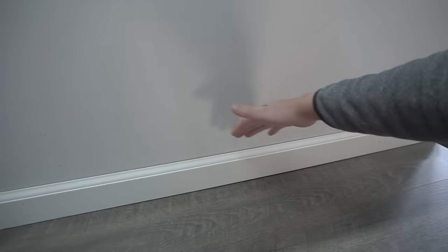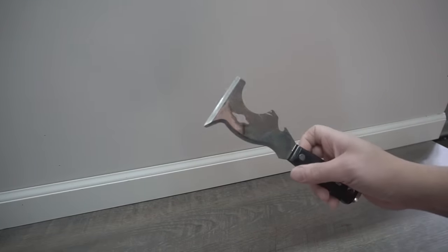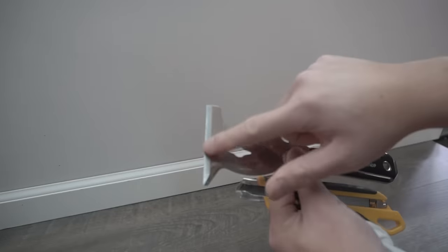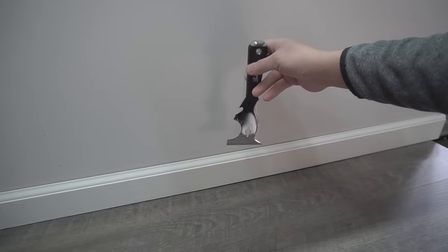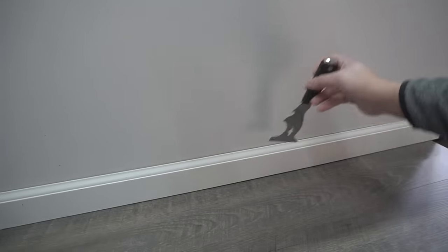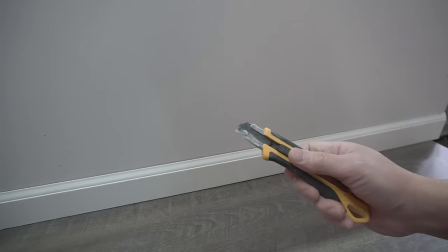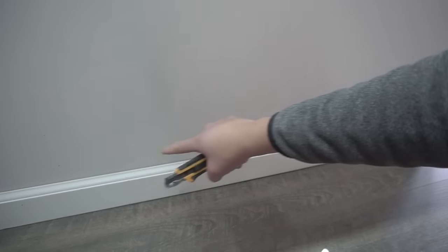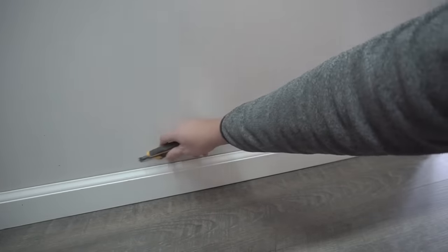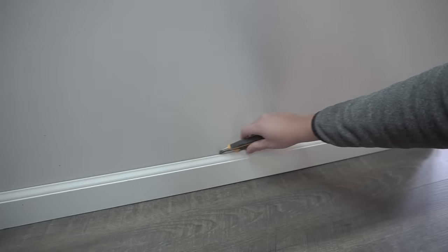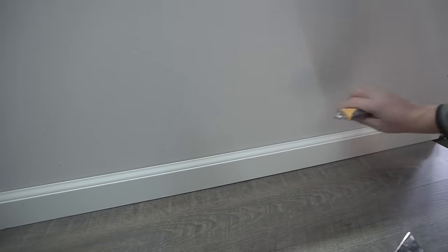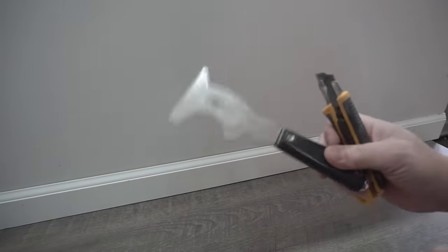So what you want to do is if you have baseboards that are already installed, you want to be able to pull this off carefully. I don't have my pry bar for baseboards at the moment, but I do have my 10-in-1 tool. It does have a beveled edge right here that we can use. I'll use a piece of wood to act as leverage to carefully pull this off. Before you do that, you want to start cutting off that caulking.